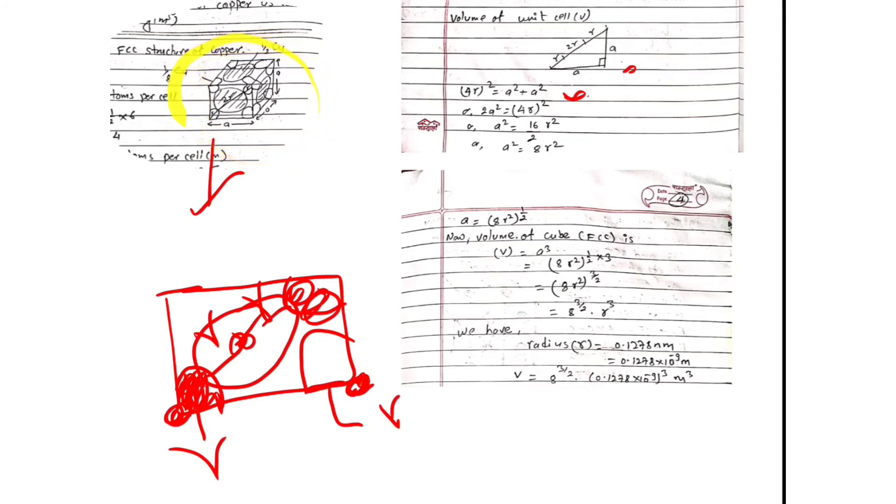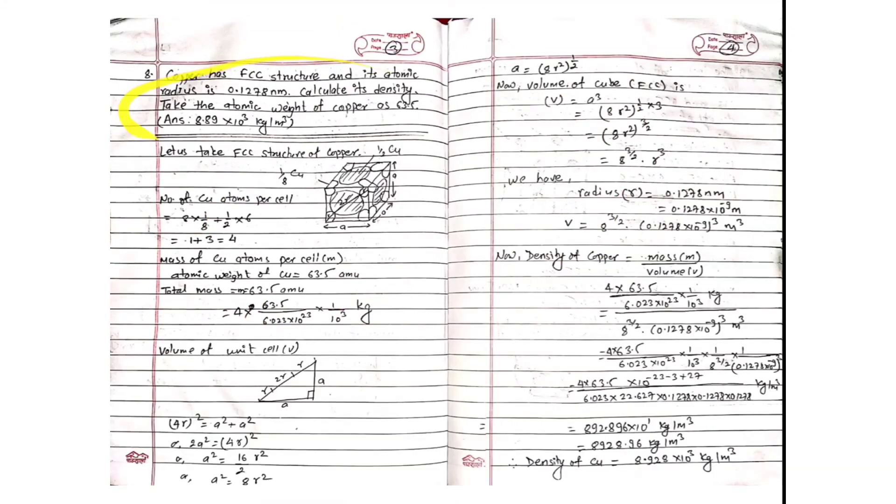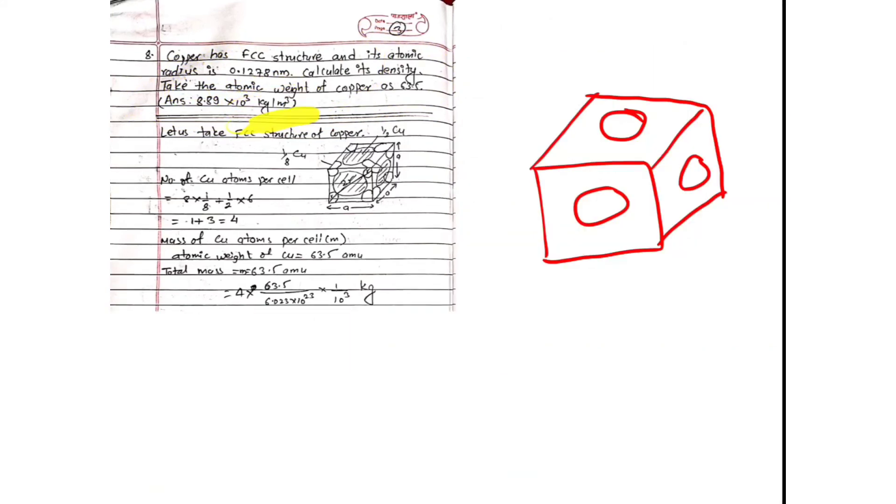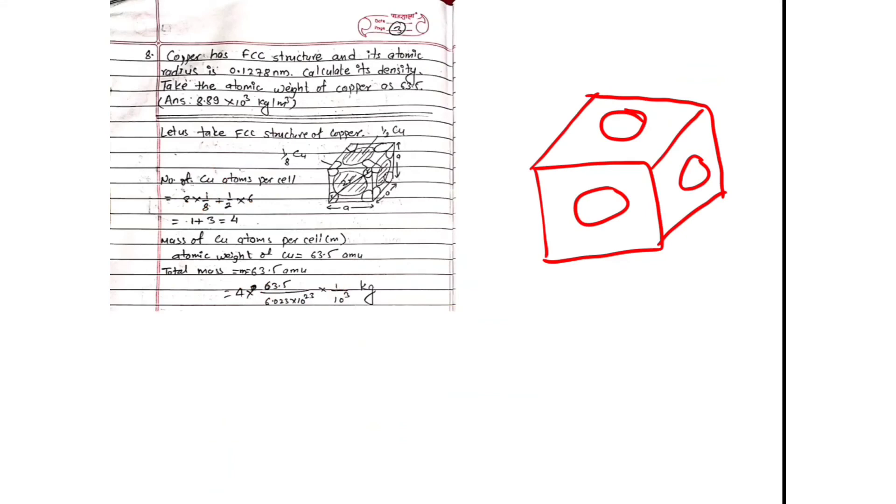The volume of this cube is a × a × a = a³, so volume V = a³ = (8r²)^(3/2) = 8^(3/2) × r³. The radius r is given as 0.1278 nanometer. Converting: 0.1278 nm × 10⁻⁹ gives the value in meters. So volume V = 8^(3/2) × r³, with r in meters, and hence the volume is in cubic meters.